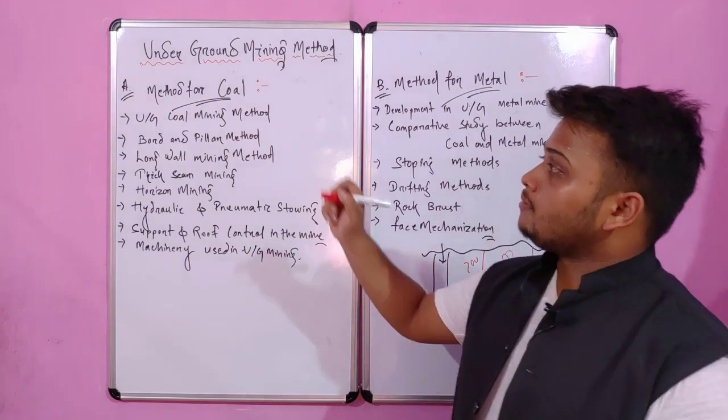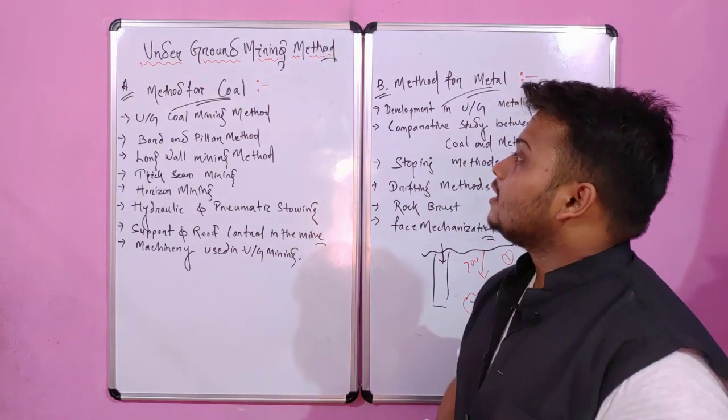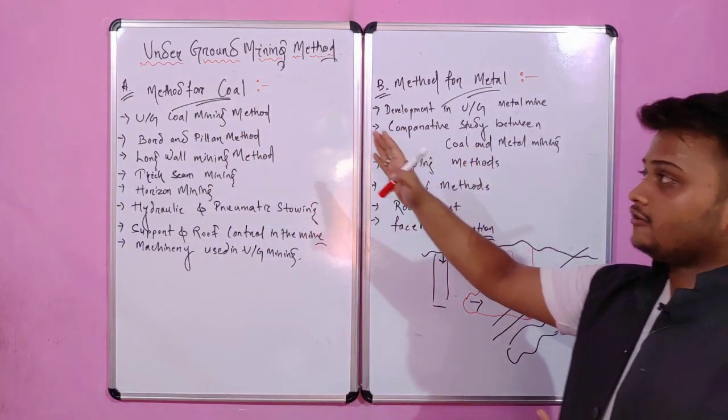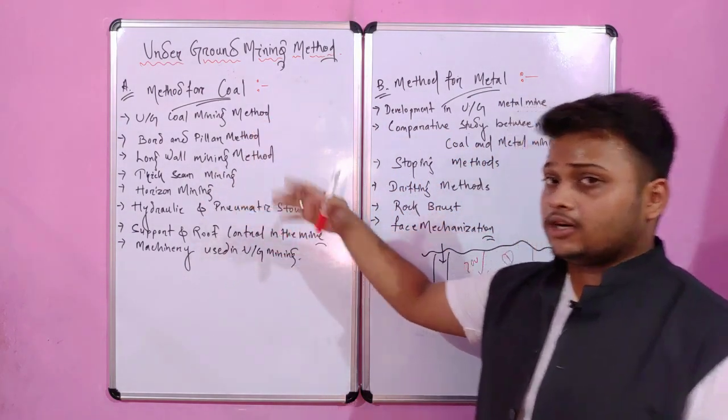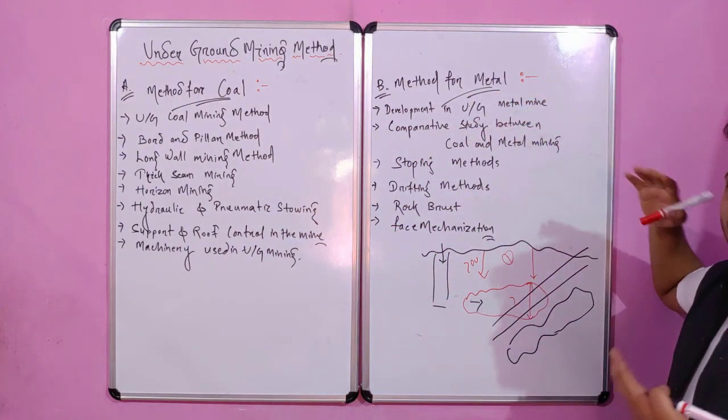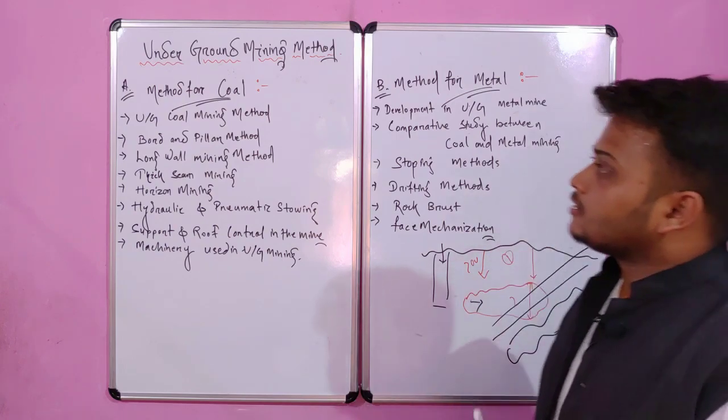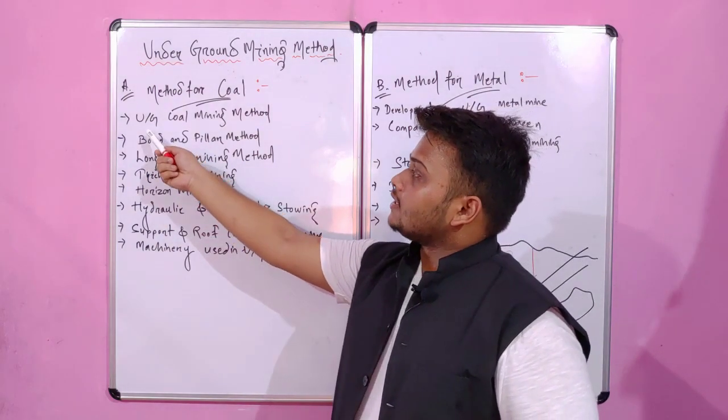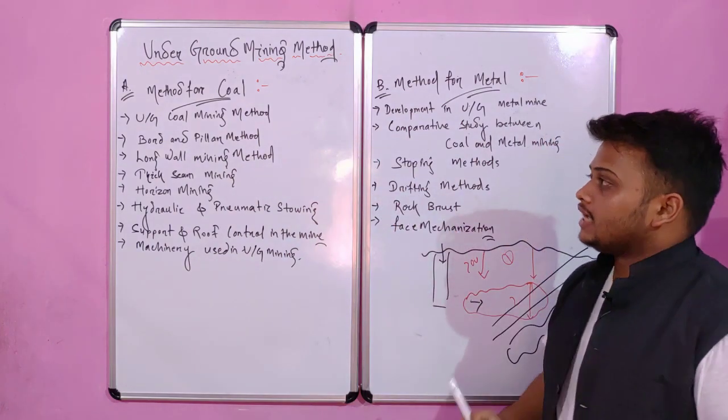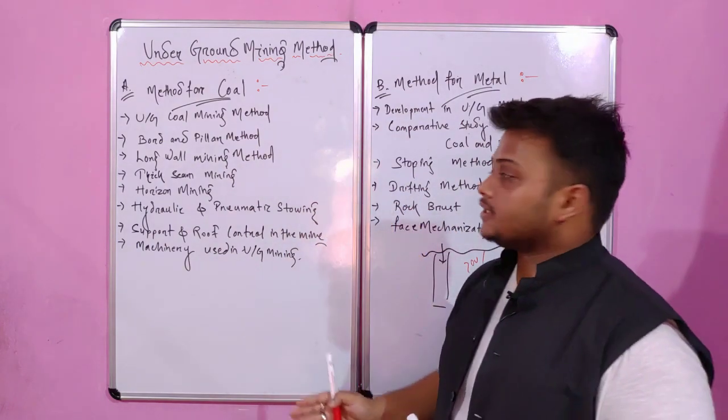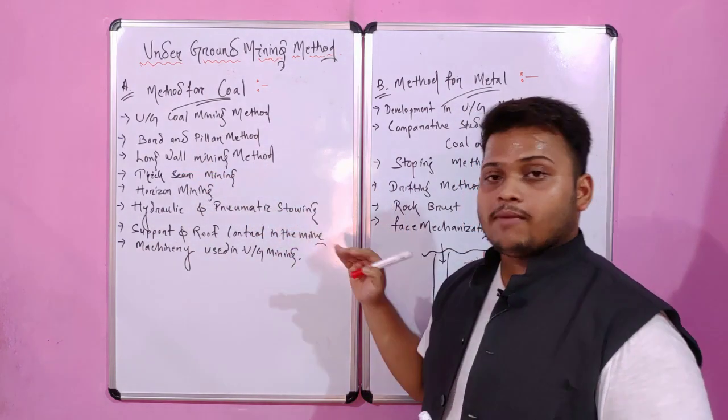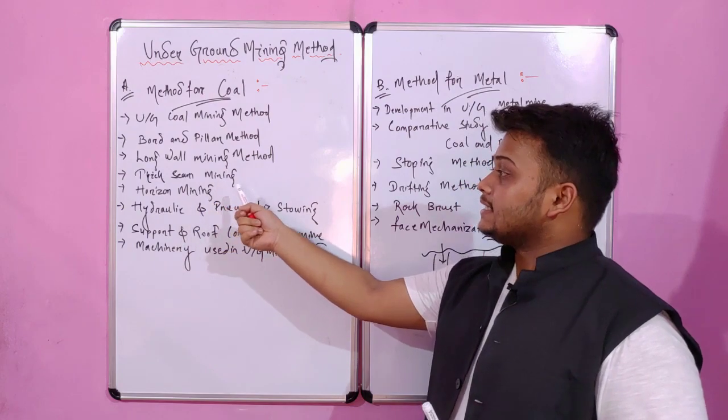Coming to the underground coal mining methods chapters, these are basically A and B parts. In the A part we discuss the methods of underground coal mining, and this part is basically about metal mining. In coal mining we discuss bord and pillar method, long wall mining method, and thick seam mining.